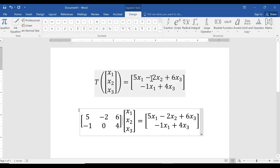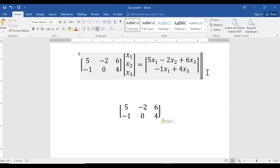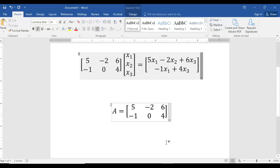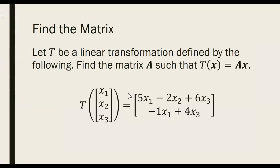X1 is multiplied by 5 in the first row and −1 in the second row. X2 is multiplied by −2 in the first row, and there's no X2 in the second row so we label that zero. The coefficients of X3 are 6 and 4 in the first and second rows respectively. So the matrix A is: [5, −2, 6 / −1, 0, 4]. It's a straightforward process — the first column holds the X1 coefficients, second column the X2 coefficients, third column the X3 coefficients.